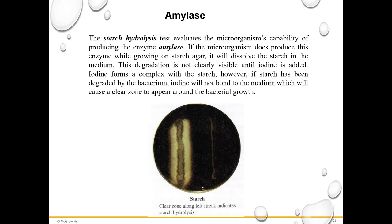The starch hydrolysis test tests for the presence of the enzyme amylase. Amylase is an enzyme that can digest carbohydrates — starch is a carbohydrate embedded in the agar plate. If the microorganism produces amylase, it eats a clear zone around the bacterial growth. You have to add iodine to see this: iodine forms a complex with starch and turns black where starch is present, and clear where starch has been digested. Here you can see one bacterium did not produce amylase so it's black, while another did produce amylase and shows clearing around its growth.